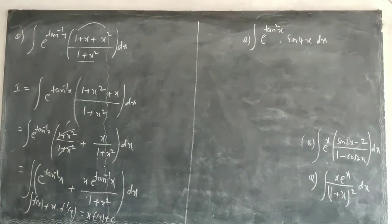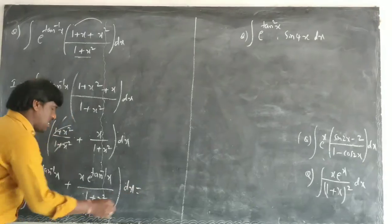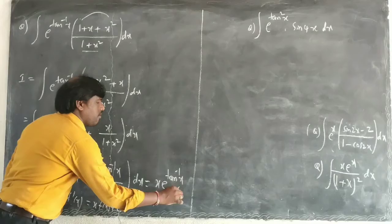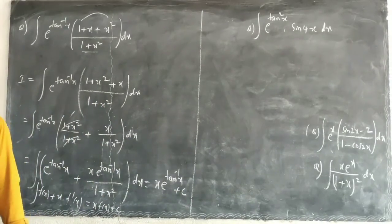So this is in this format. The answer of this value is x·e^(tan^(-1)x) + c. Stop.